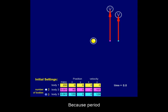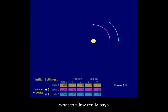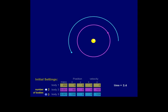Because period is inversely proportional to speed, what this law really says is that planets that have orbits farther away from the Sun have slower orbital speeds.